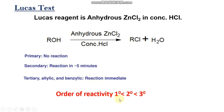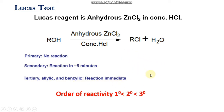The order of reactivity of different alcohols towards Lucas reagent is: primary alcohol is less reactive than secondary alcohol, and secondary alcohol is less reactive than tertiary alcohol. Simply put, tertiary alcohol undergoes reaction with Lucas reagent very quickly. Tertiary alcohol and benzylic alcohol also react with Lucas reagent very quickly.